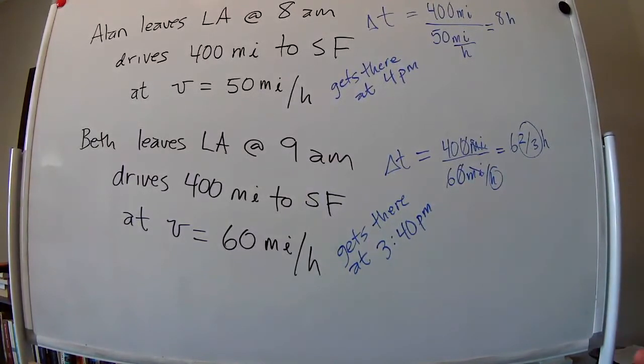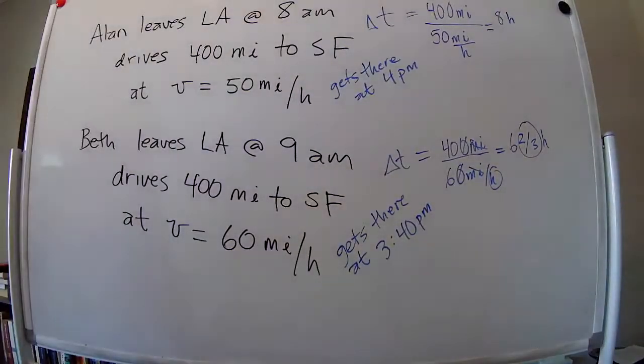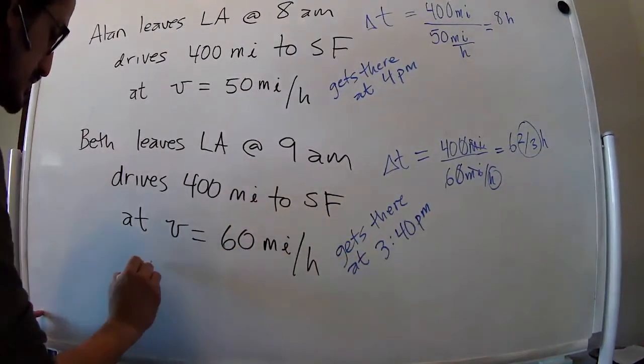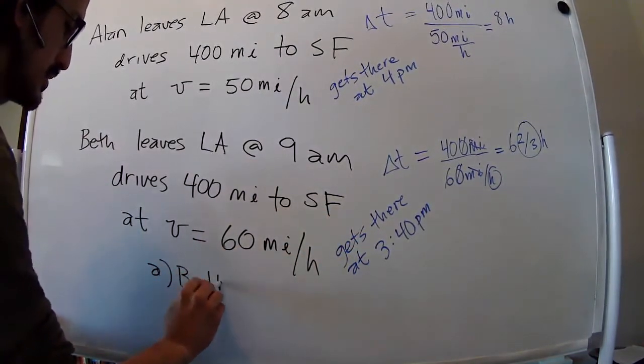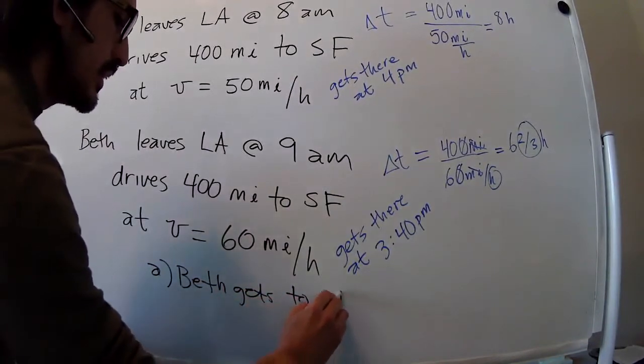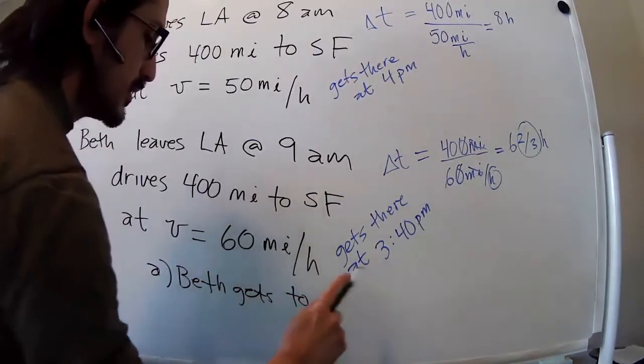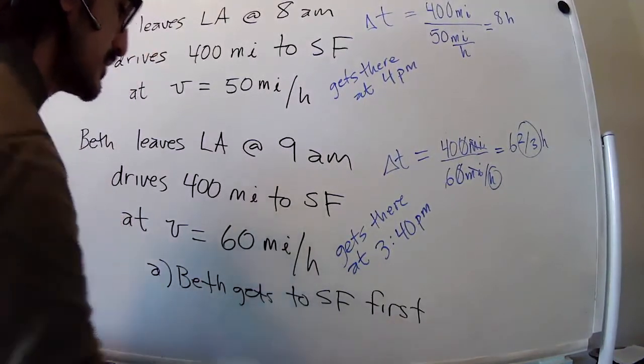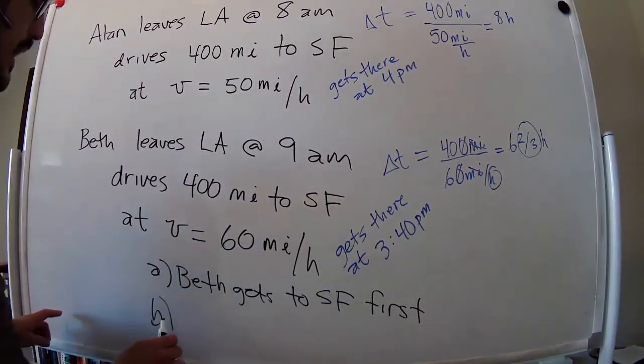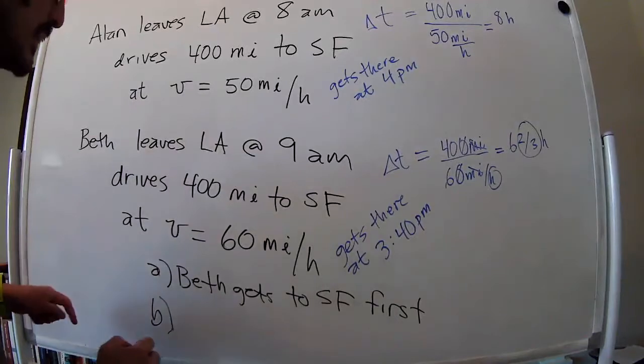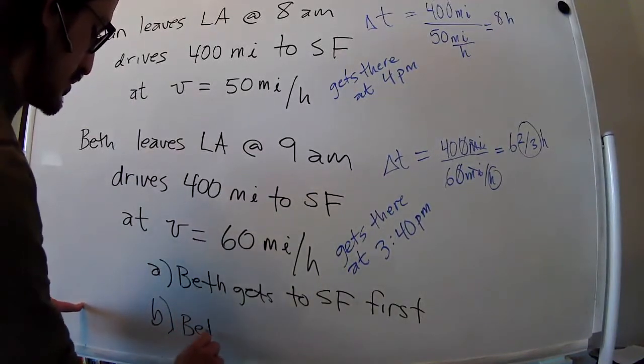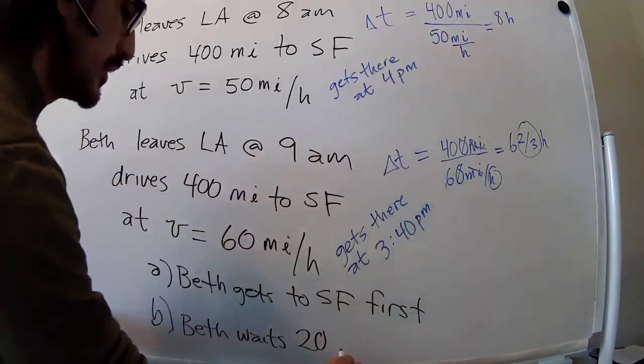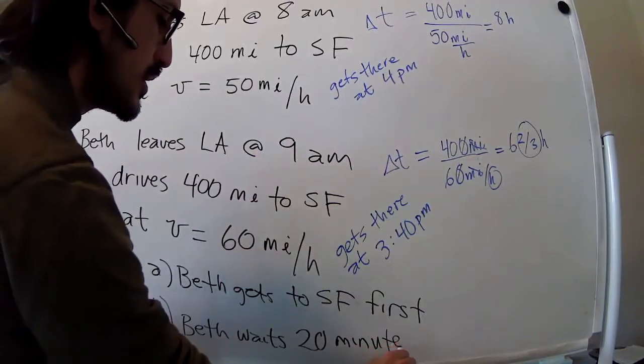So the first question is who gets there first? And the answer is Beth. She gets there at 3:40. Beth gets to San Francisco first. And how long does she have to wait for Alan? Beth waits 20 minutes, so from 3:40 to 4pm, 20 minutes for Alan.